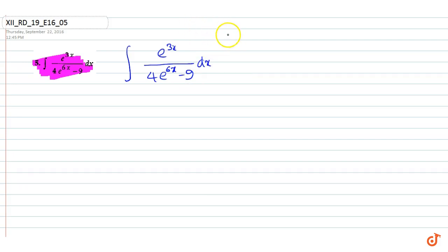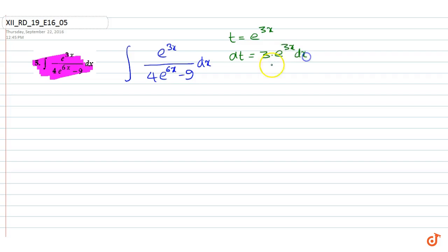Here let us make the substitution that t is equal to e to the power 3x. Then dt is equal to 3 into e to the power 3x into dx. So our integral becomes 1 by 3 into integral...